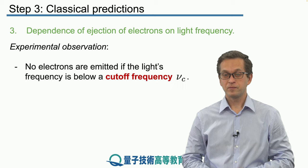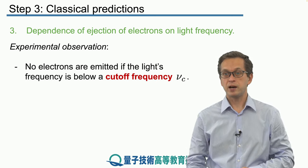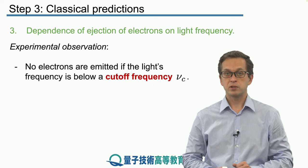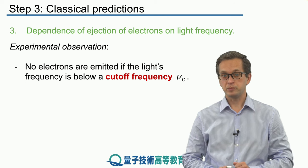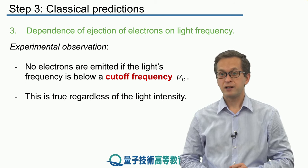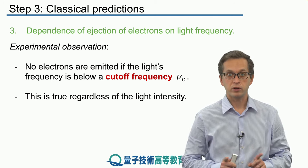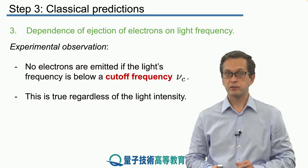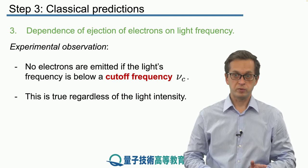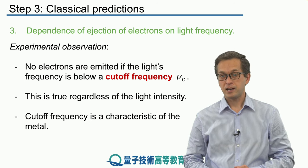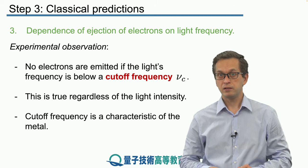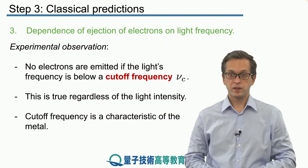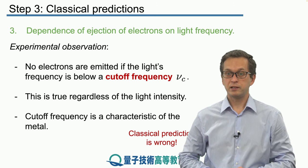Do we see this experimentally? No. There is a very clear cutoff frequency given by nu_c. If the light has a frequency below this cutoff, no photoelectrons are observed and we measure no current. This is true regardless of the light's intensity — intensity plays no role. What matters is the frequency of the light, and there is a very clear cutoff: above it we observe photoelectrons, below it we observe nothing. Furthermore, this cutoff frequency is a characteristic of the metal only, independent of the light — every material has a different measurable cutoff frequency. So again, the predictions of classical electromagnetic theory are wrong.